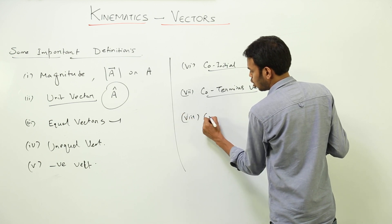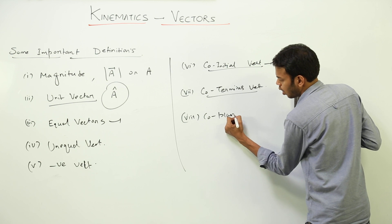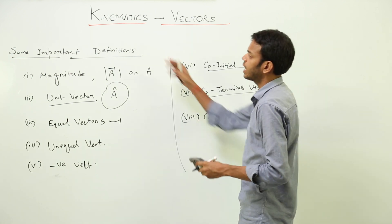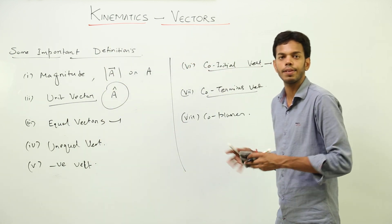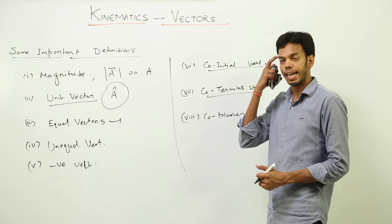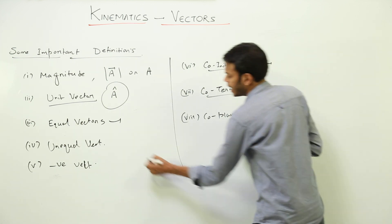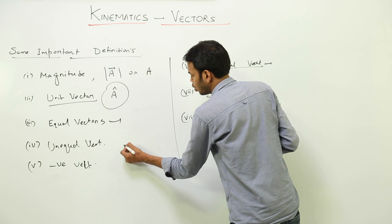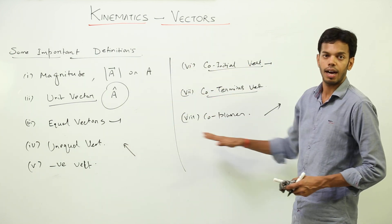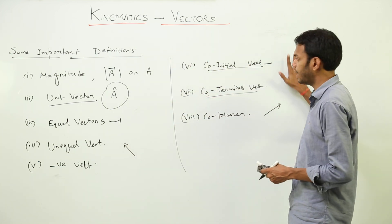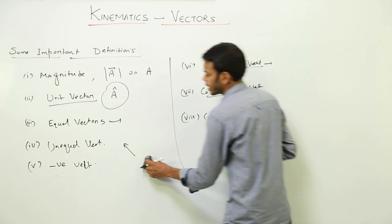Then we have co-planar vectors. Of all the vectors drawn to explain these concepts, all of them are co-planar — that means they are in the same plane. These two vectors are co-planar because they lie on the same plane of the whiteboard.